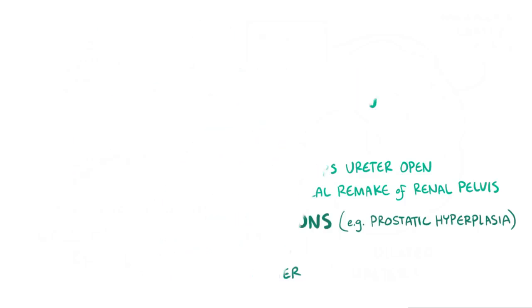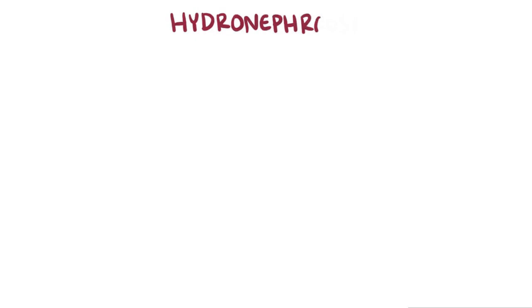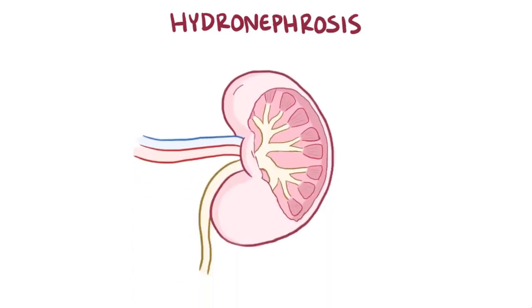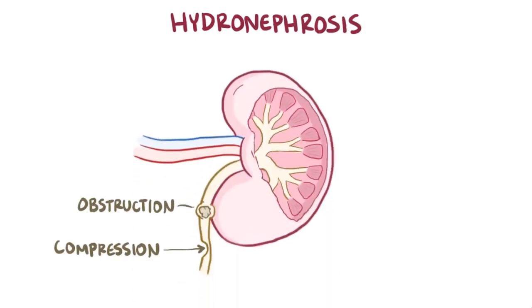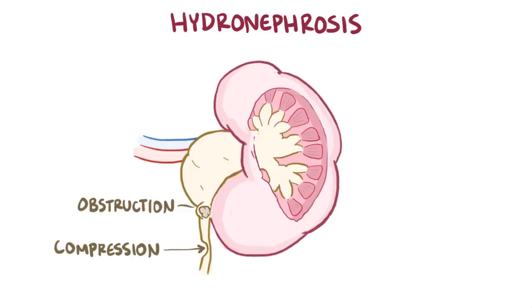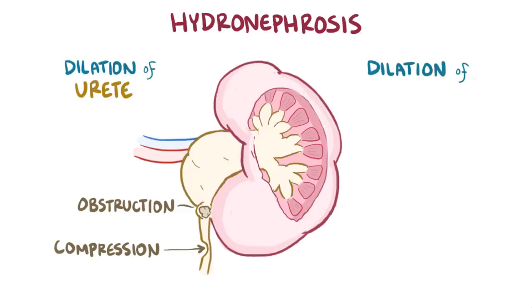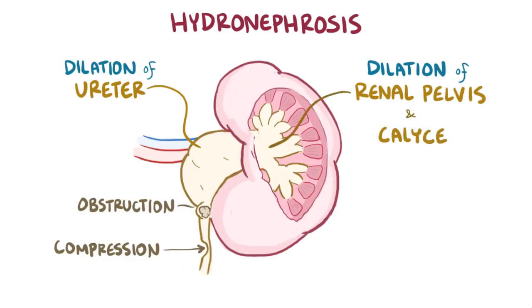As a quick recap, hydronephrosis is typically caused by either obstruction in or compression of the urinary tract, which leads to a buildup of urine and pressure, and dilation of the ureter, renal pelvis, and calyces.